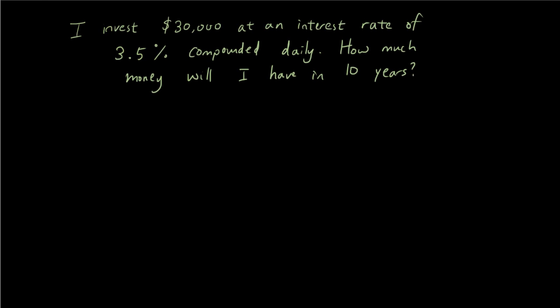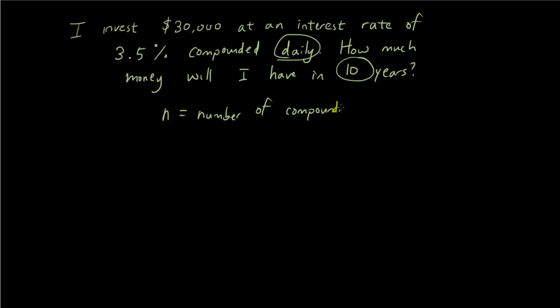Now I'm going to show you another example where we compound the interest daily. Here's the question: I have $30,000 at an interest rate of 3.5% compounded daily — how much money will I have in 10 years time? The first thing we work out is how many days are in 10 years, and we give that a variable: n equals the number of compounding periods. The compounding period is daily, so it's 365 times 10, which is 3,650 days.